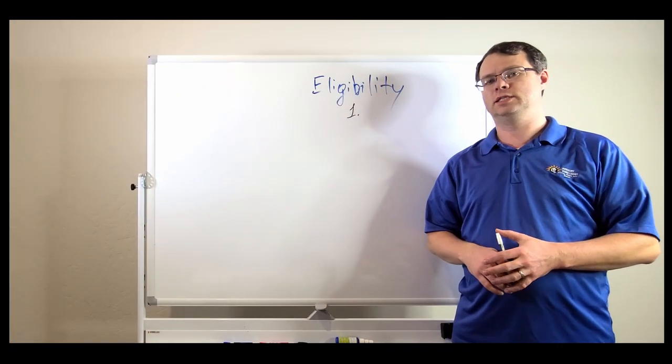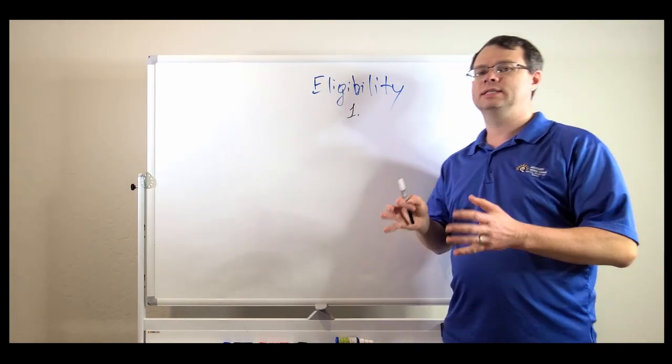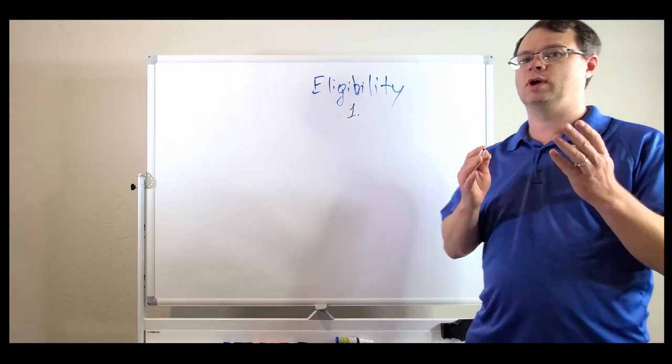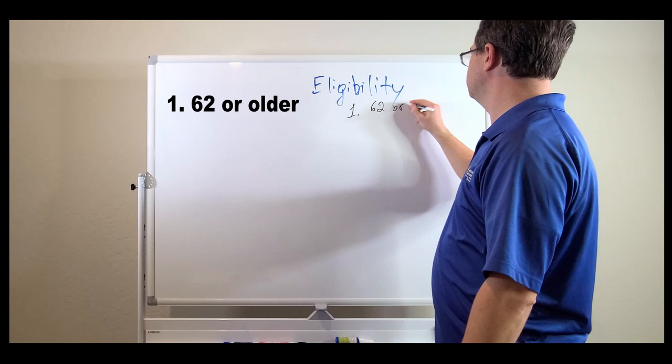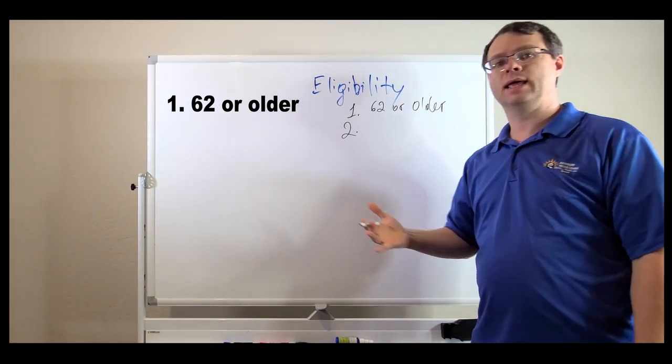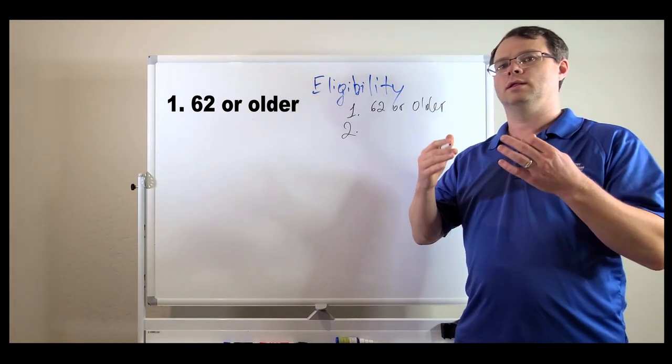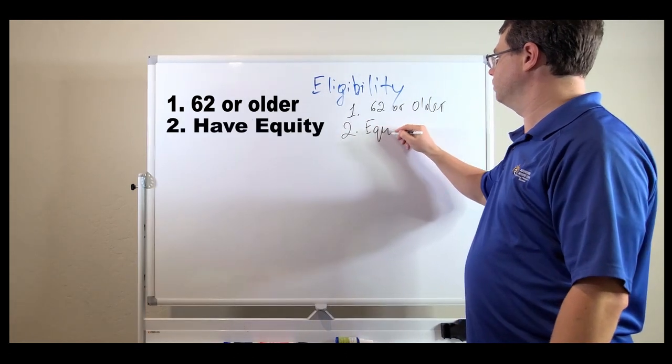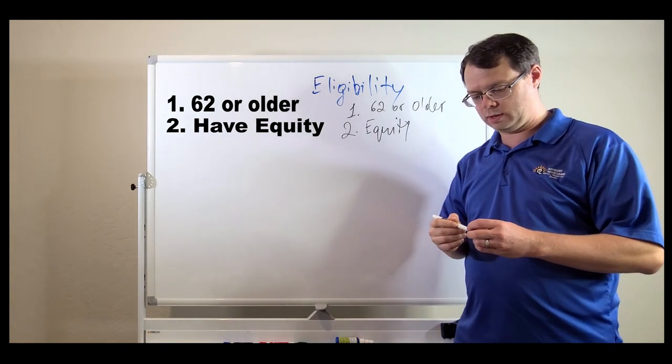What is the eligibility for the HECM mortgage? Well, it has been designed for seniors, 62 and older. So, the first requirement is you have to be 62 or older. The second is in the name of a home equity conversion mortgage. You need to have equity in the house. Equity is the second requirement for a HECM loan.